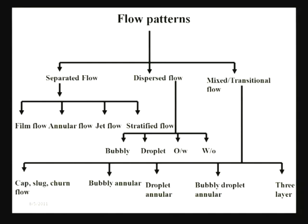When we have separated flow, it is very easy to model — we can just consider them as two separate fluids. When it is completely mixed or dispersed or homogeneous flow, again it is very easy; we can consider it as a single fluid with suitable average properties, since the properties are uniform throughout the cross section and along the length.